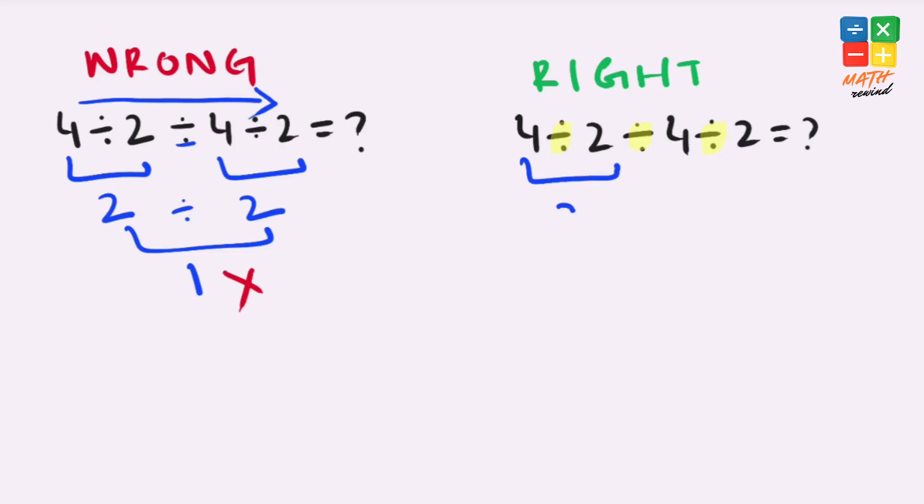So 4 divided by 2 gives us 2. Our expression simplifies to 2 divided by 4 divided by 2. Now again, we have two division operators present in this expression, so we solve the left side first.